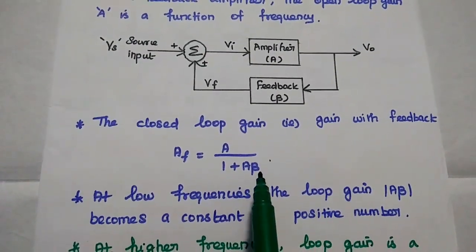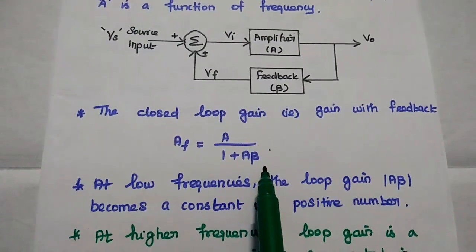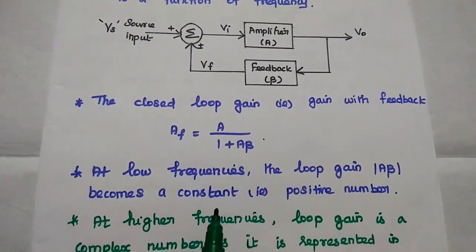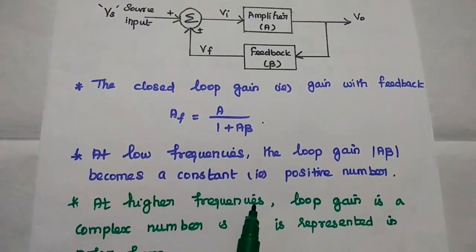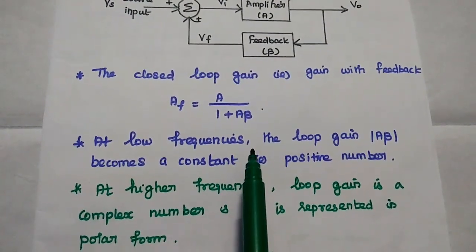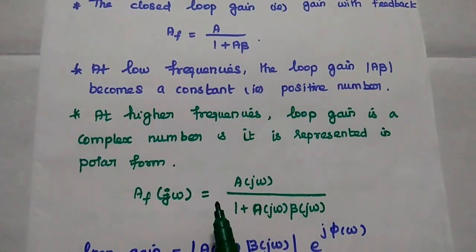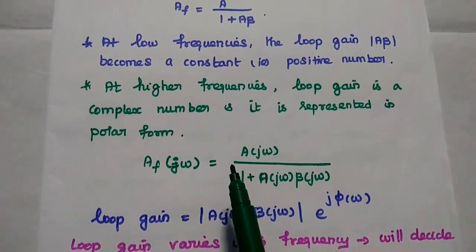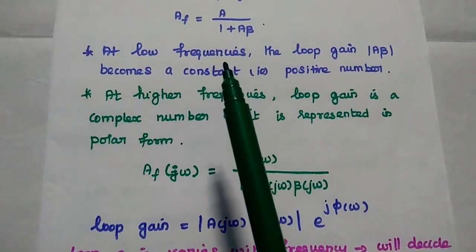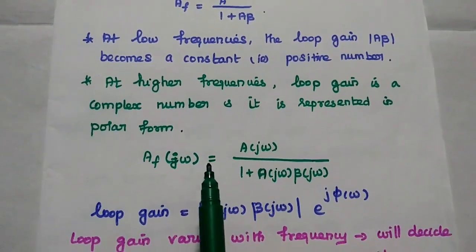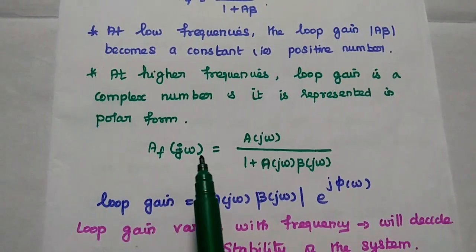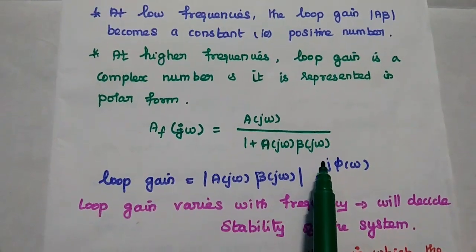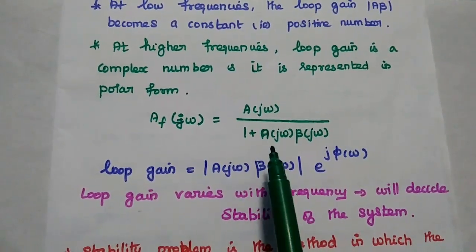The product of the gain of the amplifier and the gain of the feedback network is known as the loop gain. At low frequencies, the loop gain A·beta becomes a constant positive number, so stability can be maintained. At high frequencies, the loop gain is a complex number represented in polar form. The equation becomes Af(jω) equals A(jω) divided by 1 plus A(jω)·beta(jω), for the high frequency range.